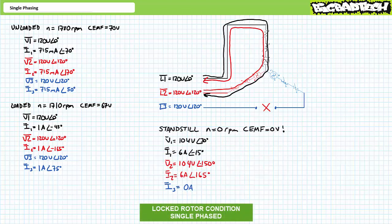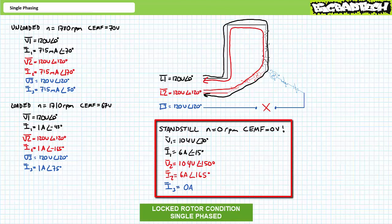Let's now examine the electrical theory behind a single phasing event at standstill for a Y-configured motor — this is where things get really bad. Consider a Y-configured motor at standstill being energized by only two phases: phase L1 and L2 show up on time, while phase L3 is disconnected. Upon closure of the motor starter, the motor would emit an angry buzz and refuse to budge. In the locked rotor condition — i.e., rotational speed equals zero RPM — each winding experiences zero volts of counter-electromotive force in opposition to applied voltage.